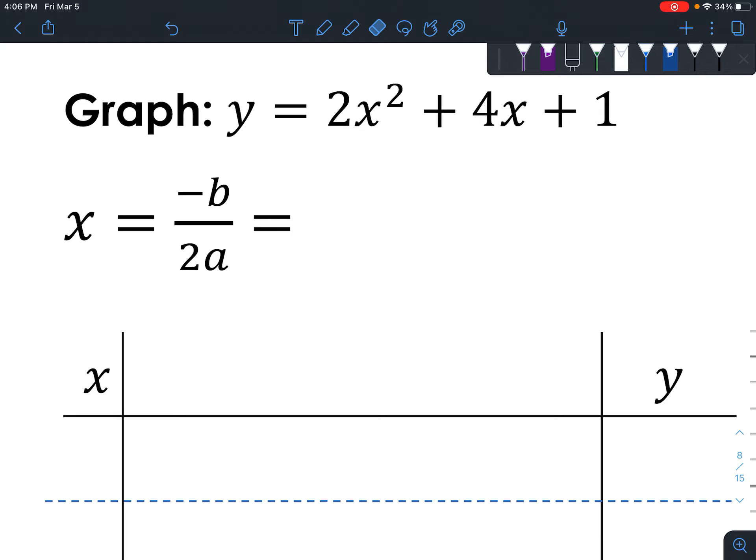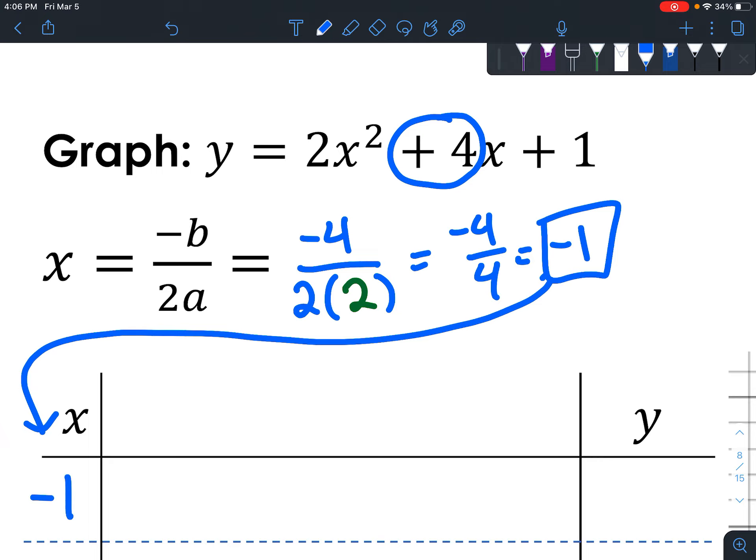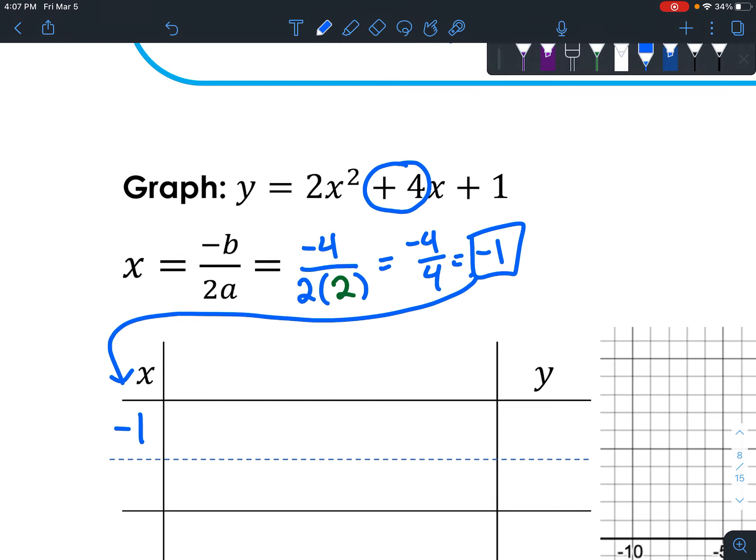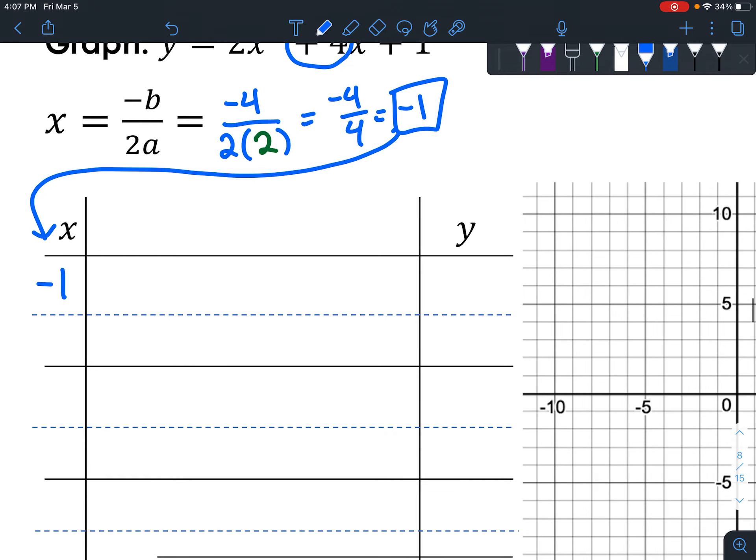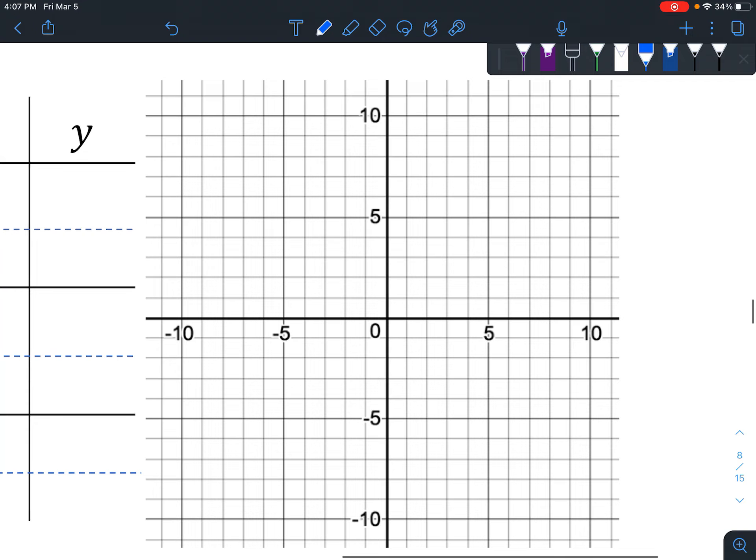Okay, so we're going to find the axis of symmetry first by going x equals negative b over 2a, and remember b is in front of the x, so the opposite of positive 4 is negative 4, and then you're always going to have 2 times whatever is in front of the x squared. And so this ends up equaling negative 4 divided by 4, which is negative 1. And you're going to immediately put that into the space. And what you're going to do is that will tell you what the vertex is once you evaluate it. Now let's graph just our axis of symmetry. Negative 1 goes right here.